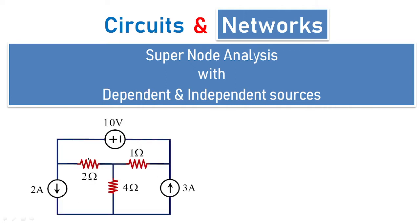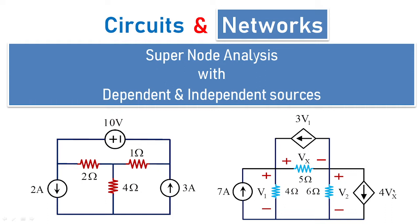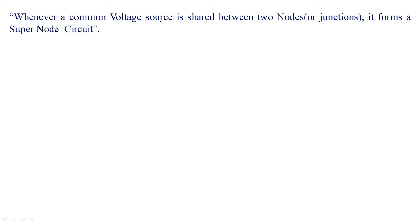So one example: you can see you have independent sources. 10 volts is the voltage shared between these two points. Then you can see 4Vx which is the voltage dependent current source and that Vx is measured across 5 ohms. So how do we solve this kind of problem using super node technique? Whenever a common voltage source is shared between two nodes or junctions, it forms a super node circuit.